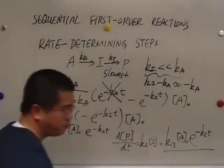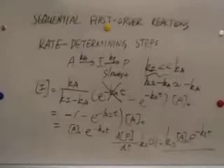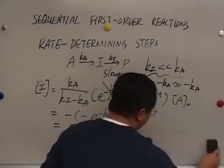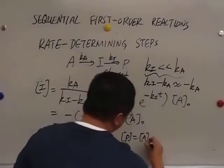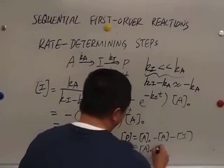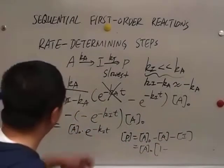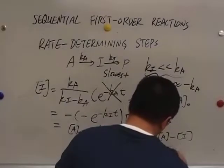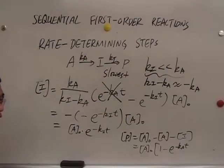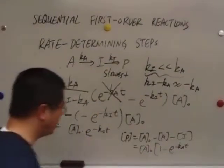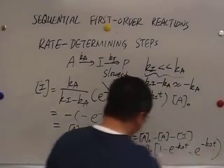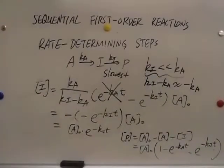And this is e to the power of negative KiT instead of KaT. What about the expression for the concentration of P? It's very simple. P equals A naught minus A minus I. And we will have A naught as the common factor minus the concentration of A, which is first order exponential decay, and then minus the concentration of I. We have the expression here. I'll use the round parenthesis here.